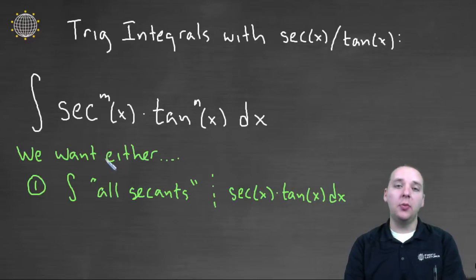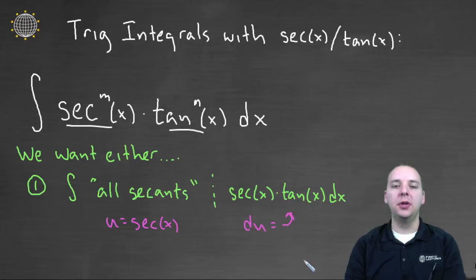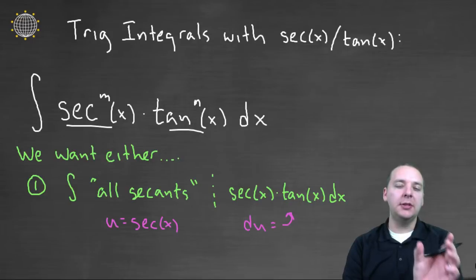So here's what we want, we either want at the end of the day we want to keep the majority of our integrand all secants and we would like to save out of these different factors of secant and tangent I would like to pick off or save one secant and one tangent. Now why would we like to do that? Well, if you have all secants in your integrand then secant can be your u, secant x can be your u and then that would make secant tangent your du. That's what it boils down to at the end of the day, making the majority of the integrand a function of u and you save just enough terms to be the du at the end of the problem.